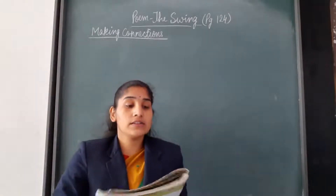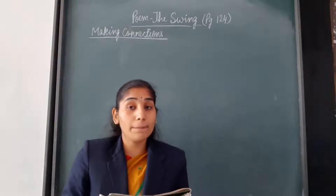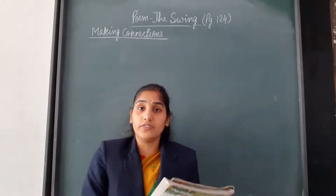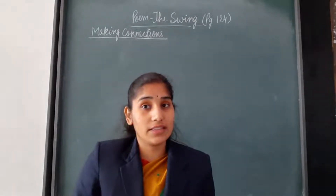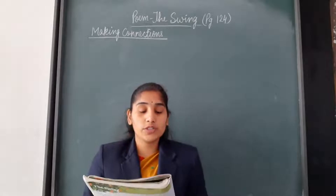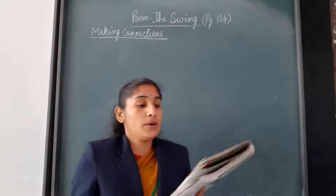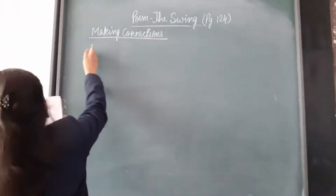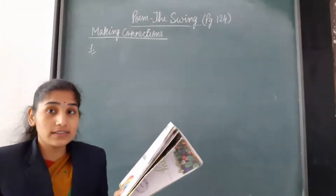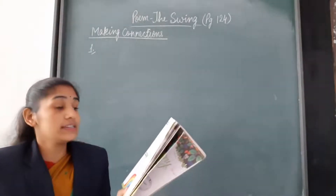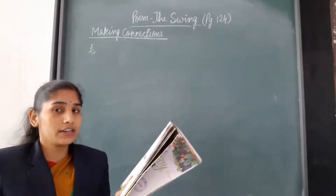Question number 1 is: circle the things that the child can see from up in the air. So children, when the child is swinging up in the air, what are the things that he can see? The options are: blue sky, school, brown roof, red roof, green garden, horses, cows, seas, rivers, fields, and clouds of people.